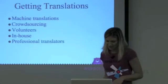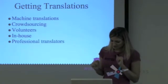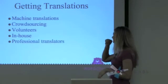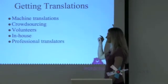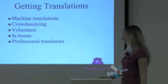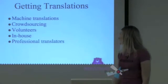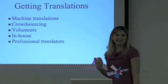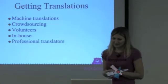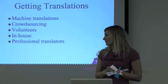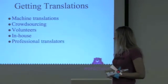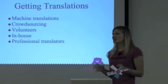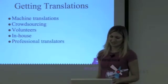For getting translations, you have a bunch of different options. You can start with machine translations, you can do crowdsourcing, you can get volunteers, you can have people in-house, or you can buy professional translations. From what I've seen with WordCheck, most people start with machine translations and then get human volunteers from their user communities. Professional translations can be pretty expensive, so a lot of people pick and choose their most important content to get professionally translated, try to fill in the rest with volunteers, and use machine translations if they have to.